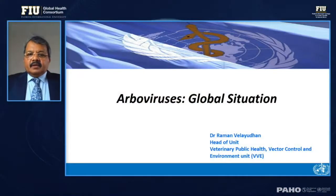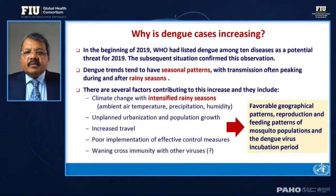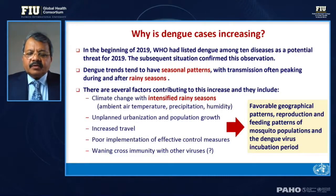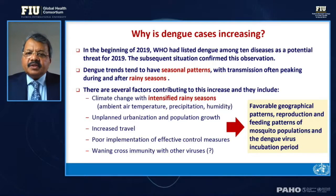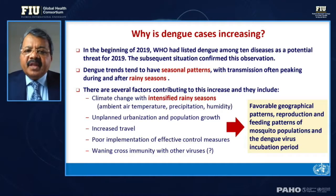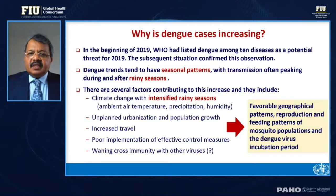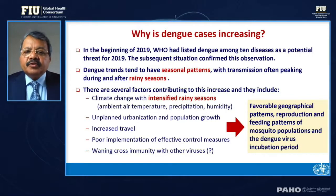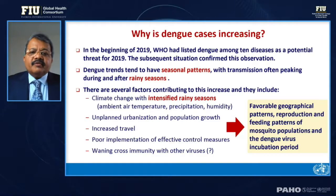Thank you so much for this opportunity; it is really a pleasure to talk to all of you. My talk is a brief on the arbovirus situation. Actually, in early 2019, WHO listed dengue among the 10 diseases with potential for outbreak that year, and it turned out to be true — we had a huge increase in dengue in over 40 countries.